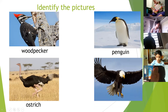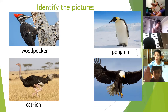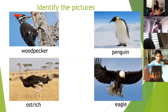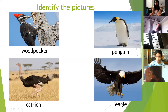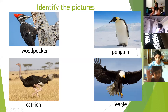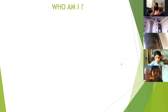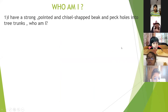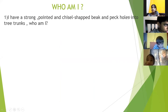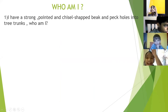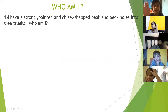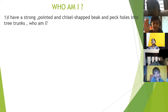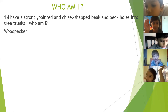Rithvik identified the next picture as an eagle. Very good. Moving on to the 'Who Am I' section: the first clue is — I have a strong, pointed, thistle-shaped beak and peck holes into tree trunks. Who am I? Kirtana answered: a woodpecker. Correct.